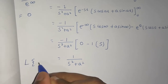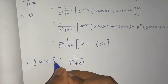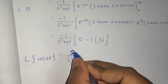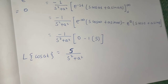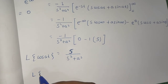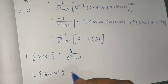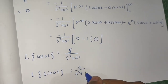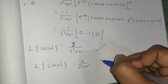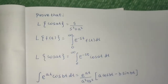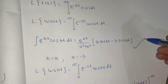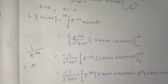So we get s in the numerator, giving Laplace of cos(at) = s/(s² + a²). In the previous video we proved that Laplace of sin(at) = a/(s² + a²), and in this video we proved Laplace of cos(at) = s/(s² + a²). The shortcut integral formula made this question pretty simple.